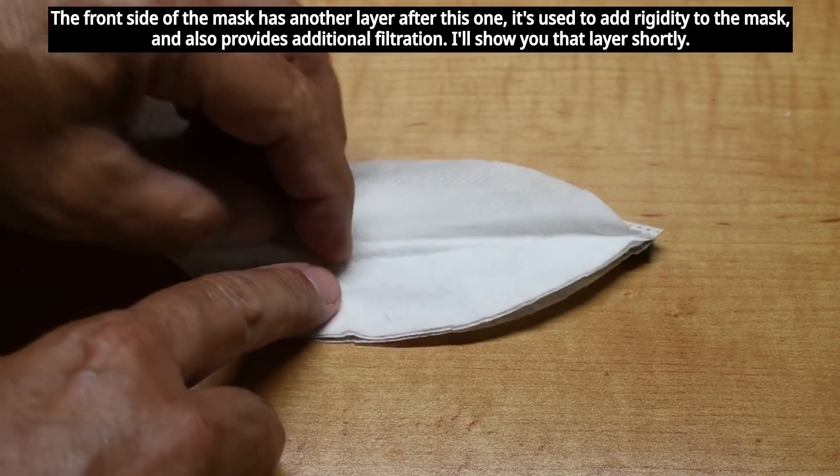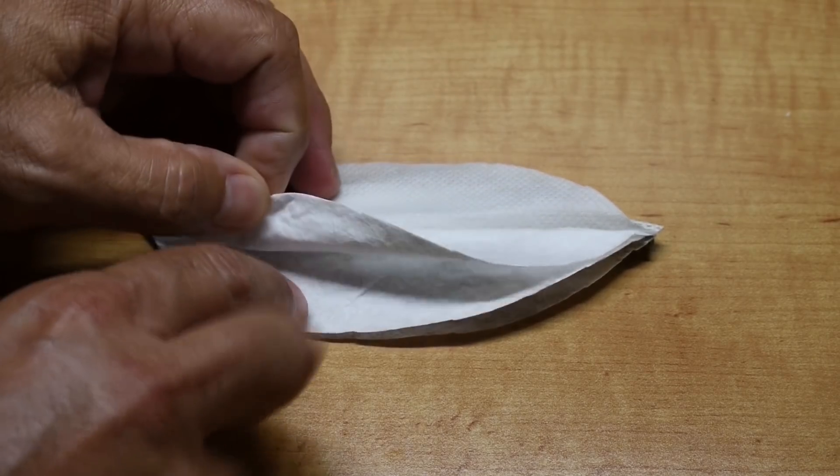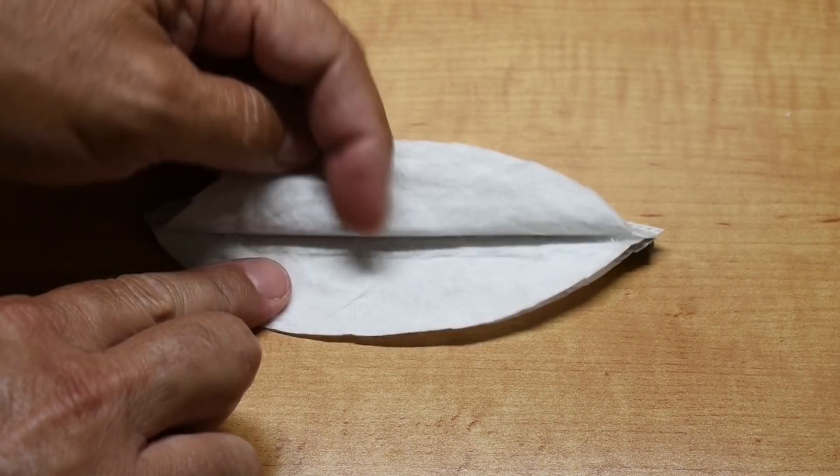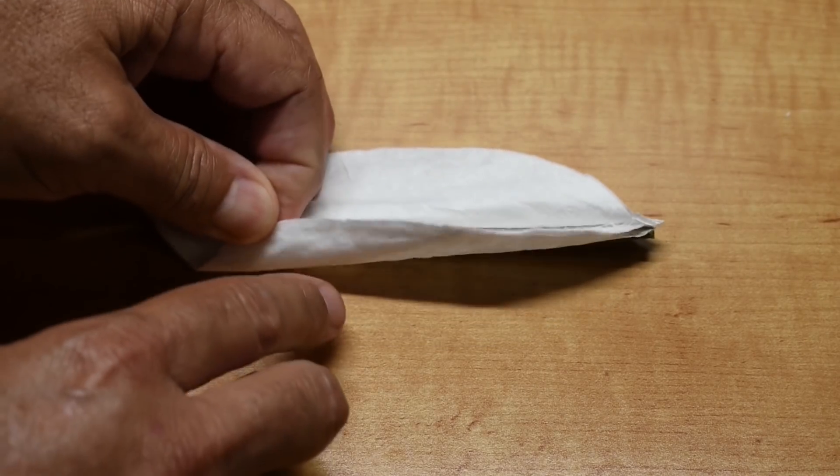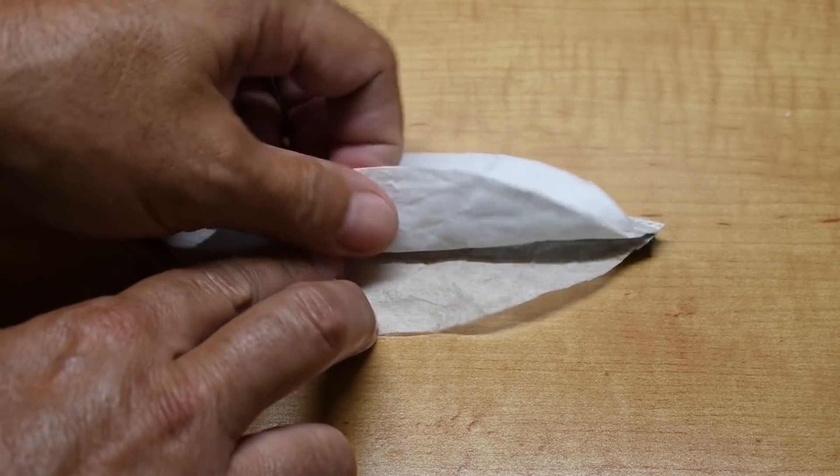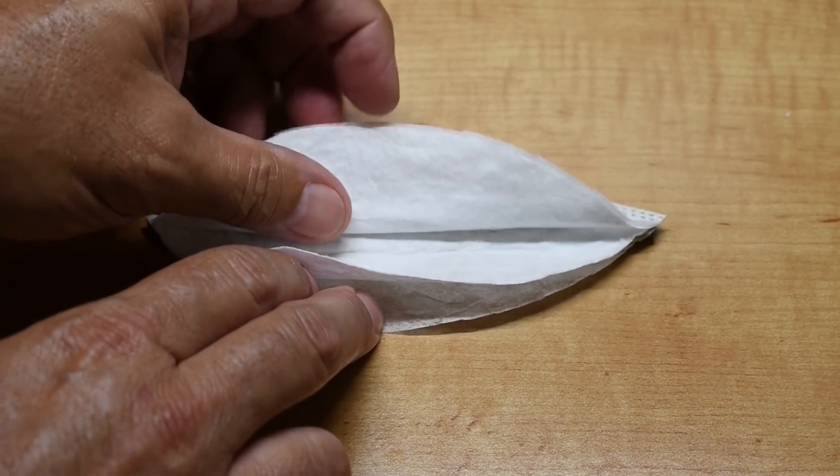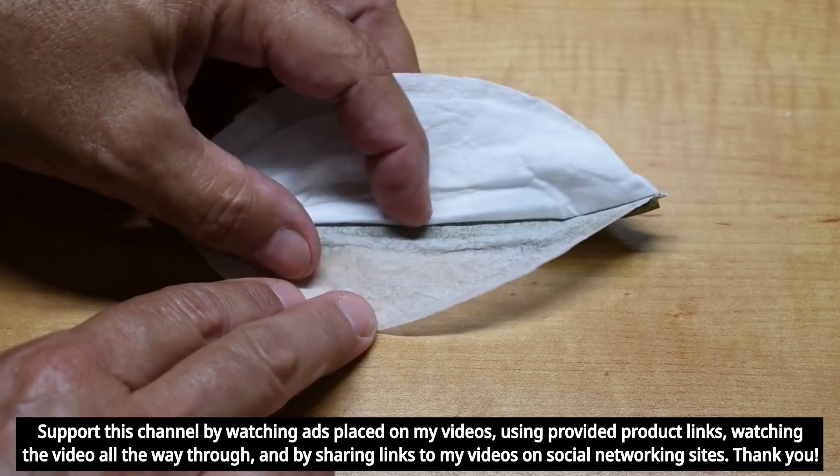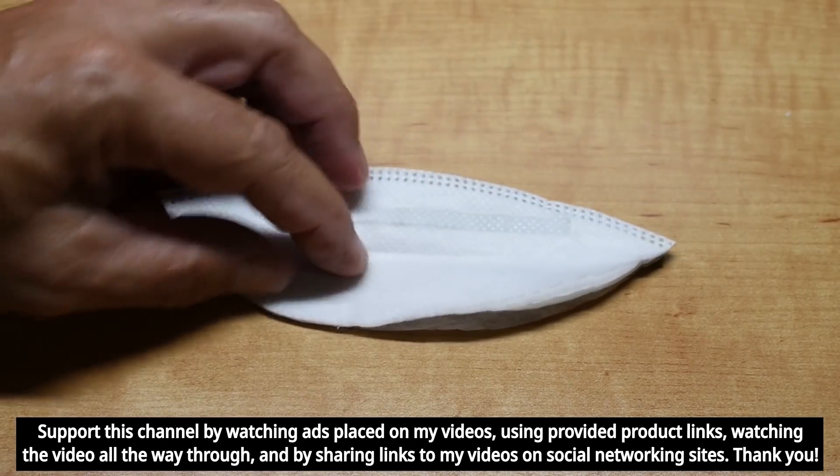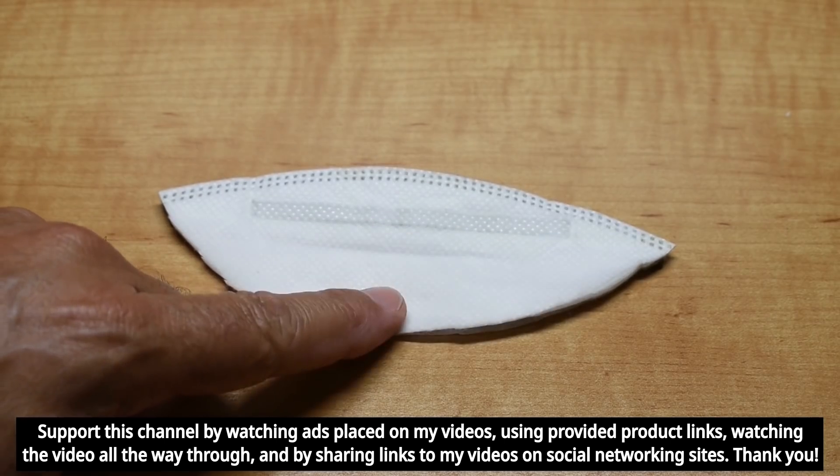Then you have this next layer right here, which is much thicker. And then under that is another layer, just like this other layer here. And then you have this bottom layer which is much thinner. So let's start by looking under the microscope at this layer right here on top.